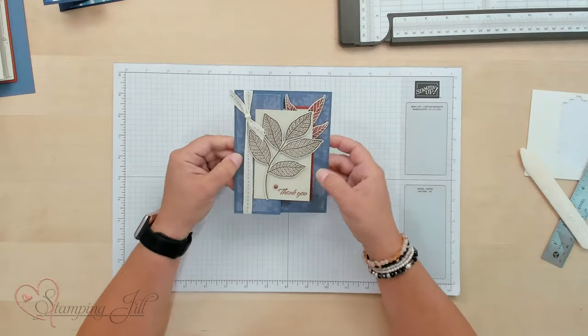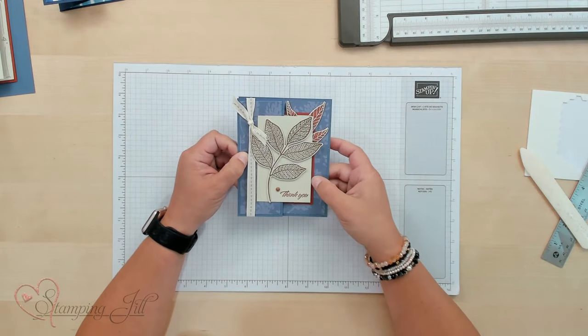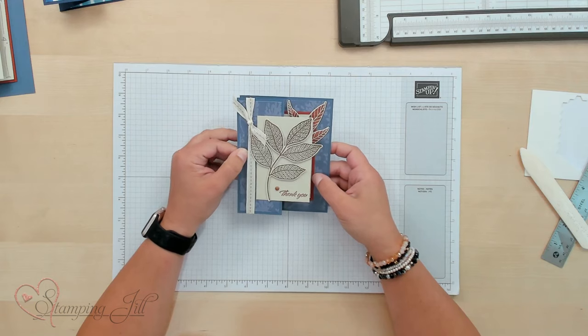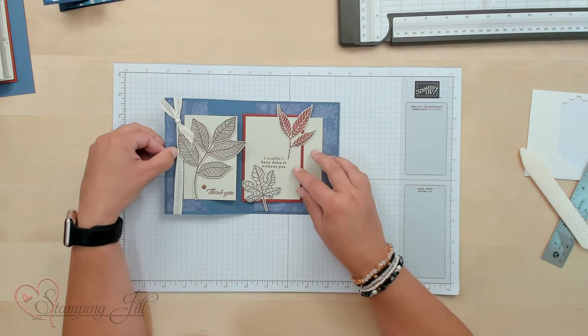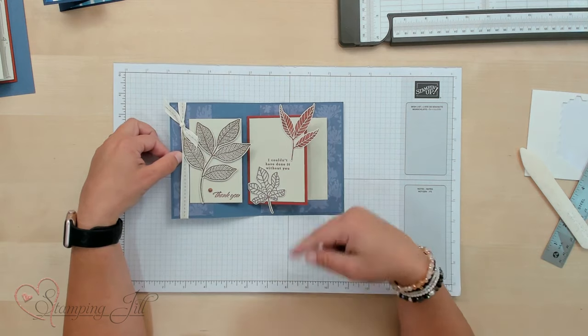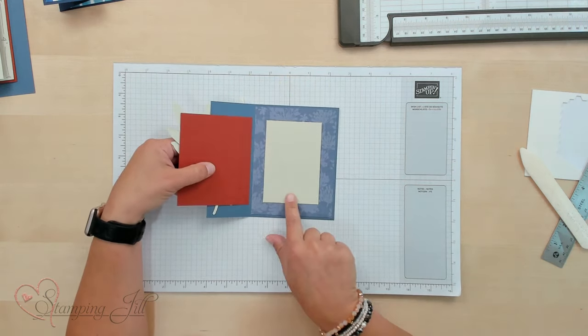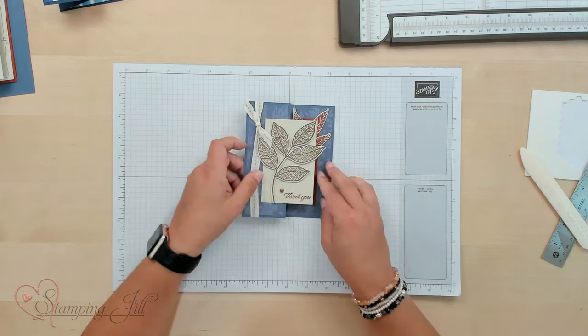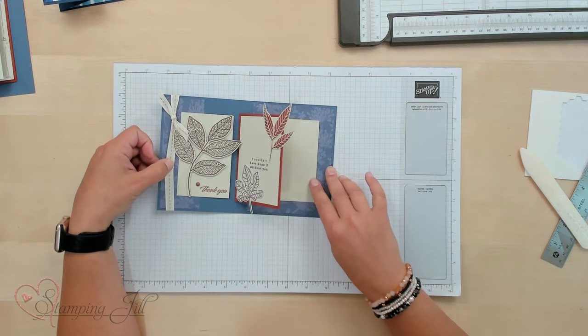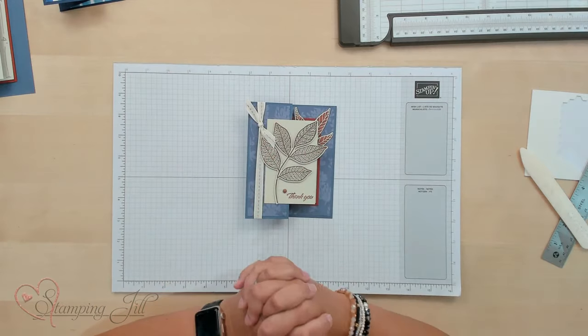So let me show you the card that I created using this color scheme. So I used the Changing Leaves Stamp Set and Die Bundle, and I made this cute fall kind of looking card. So we have thank you, and then on my middle flap, I couldn't have done it without you. And then on the inside, you could write your little message there to somebody. So just like that. It's kind of a fun and different idea to add a little bit more to your card.